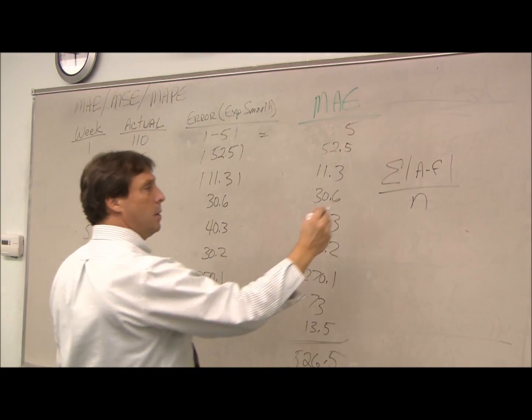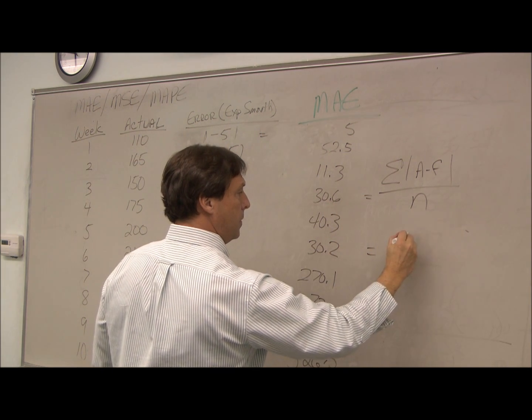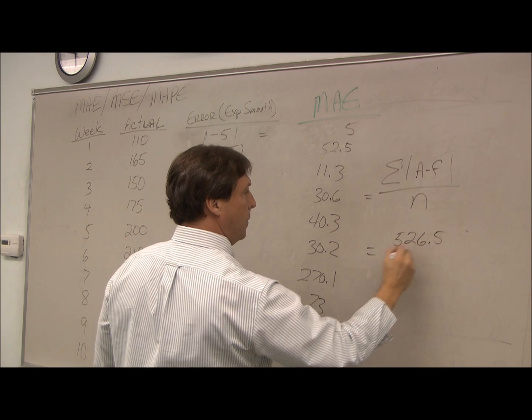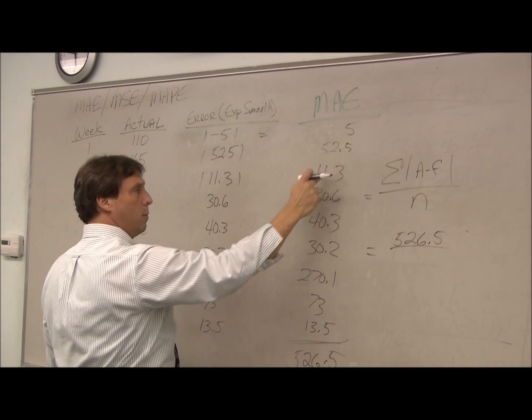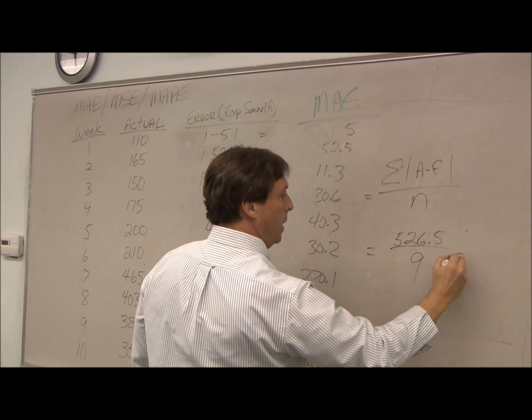All we do is divide through by n. The sum of my errors, absolute sum, is 526. I have 1, 2, 3, 4, 5, 6, 7, 8, 9 observations.